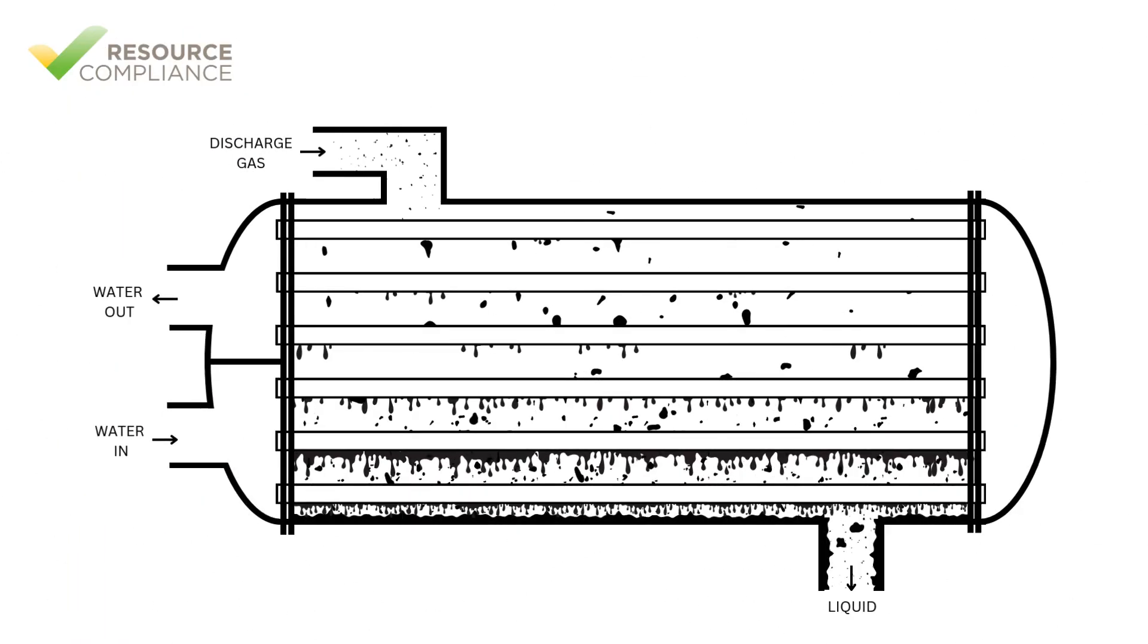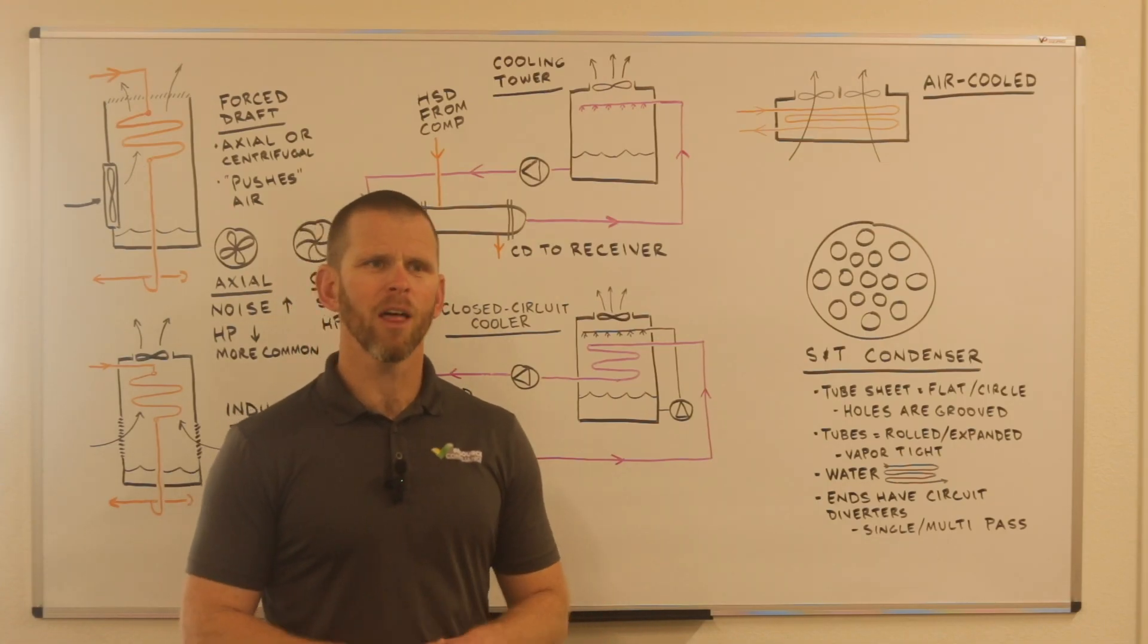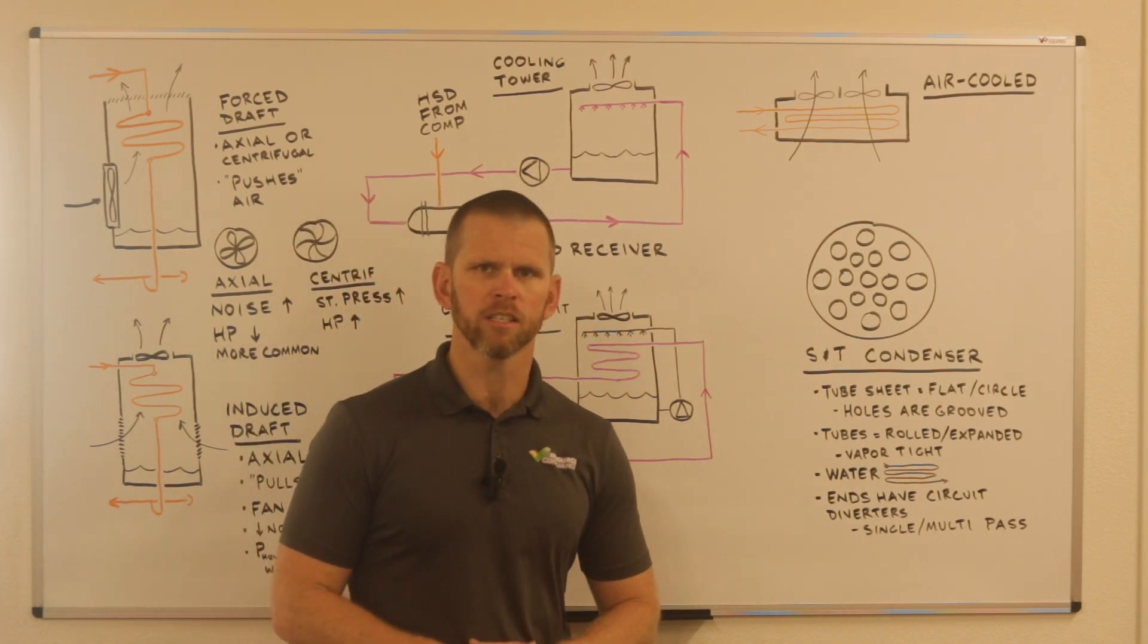Typically, the refrigerant flows through and surrounds the tubes while the water is circulated through the tubes. In this video, let's talk about shell and tube condensers. They're not the most common form of condenser, especially in ammonia refrigeration systems.